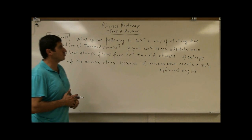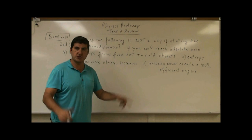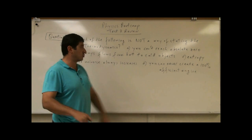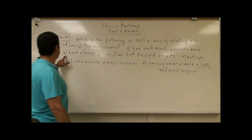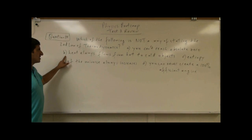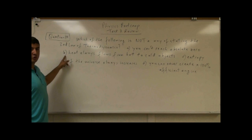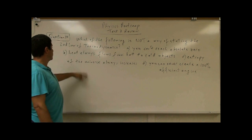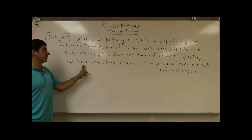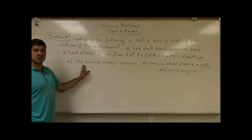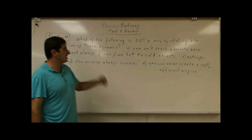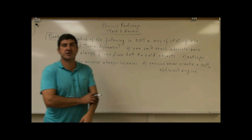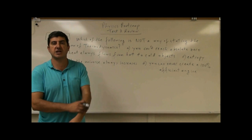The answer choices are: A, you can't reach absolute zero — it's impossible to reach absolute zero. B, heat always flows from hot to cold objects. C, entropy of the universe always increases. D, you can never create a 100% efficient engine.